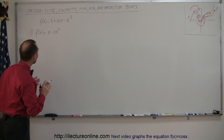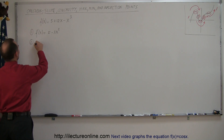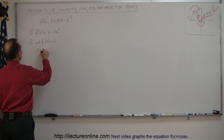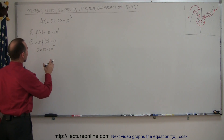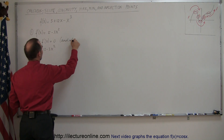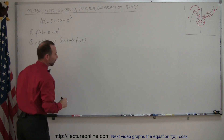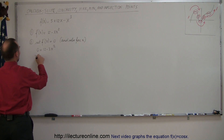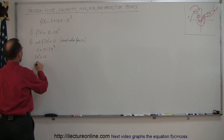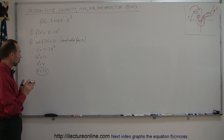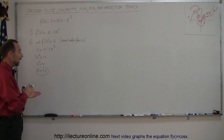Now we're going to set the derivative equal to 0. So step two, we set f'(x) = 0. So 0 = 12 - 3x². Solving for x: 3x² = 12, divide both sides by 3, x² = 4, therefore x = ±2. That means there are two places where the slope is 0, at x = 2 and at x = -2.